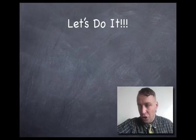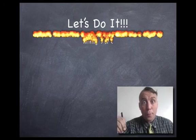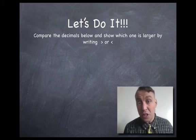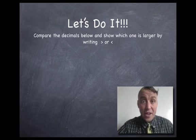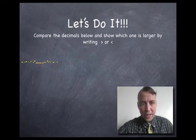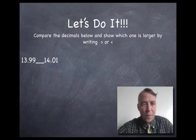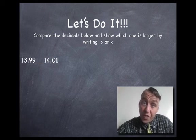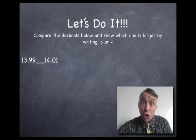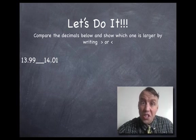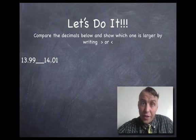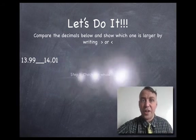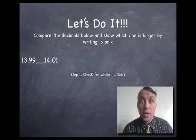Let's get right into this and let's do it. We're gonna do a couple of problems and show which decimal is larger than the other. It says compare decimals below to show which one is larger by writing greater than or less than. We're gonna look right at this first problem here: 13.99, or if you know how to read that, 13 and 99 hundredths. The second one is 14 and 1 hundredth. Here's rule number one or step number one in a two-step process for figuring out which decimal is larger. Step one: check for whole numbers.